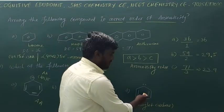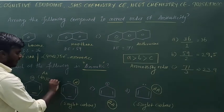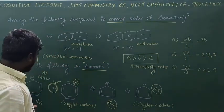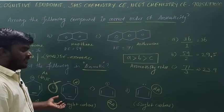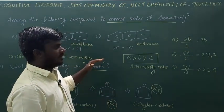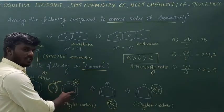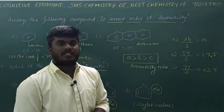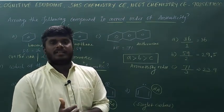Option B only is the aromatic compound. Option A is anti-aromatic, option C is anti-aromatic, option D is anti-aromatic. But option B has aromatic nature. If you have any questions, please don't forget to subscribe to our channel.